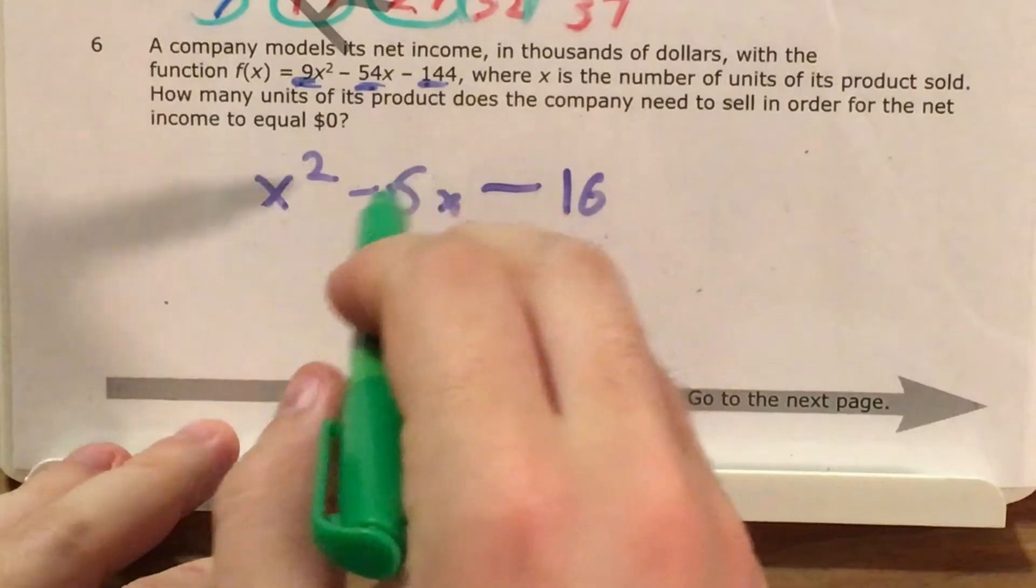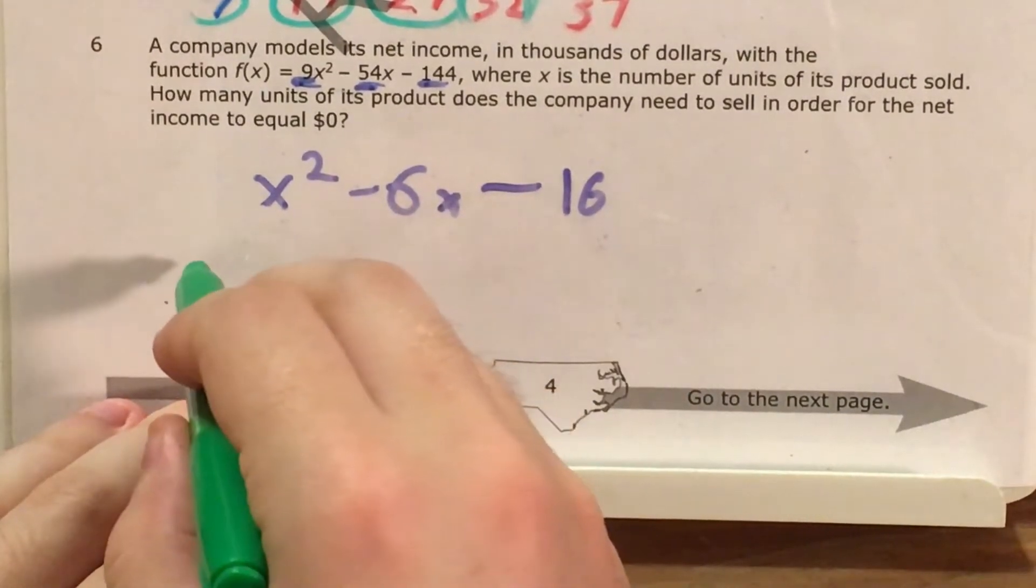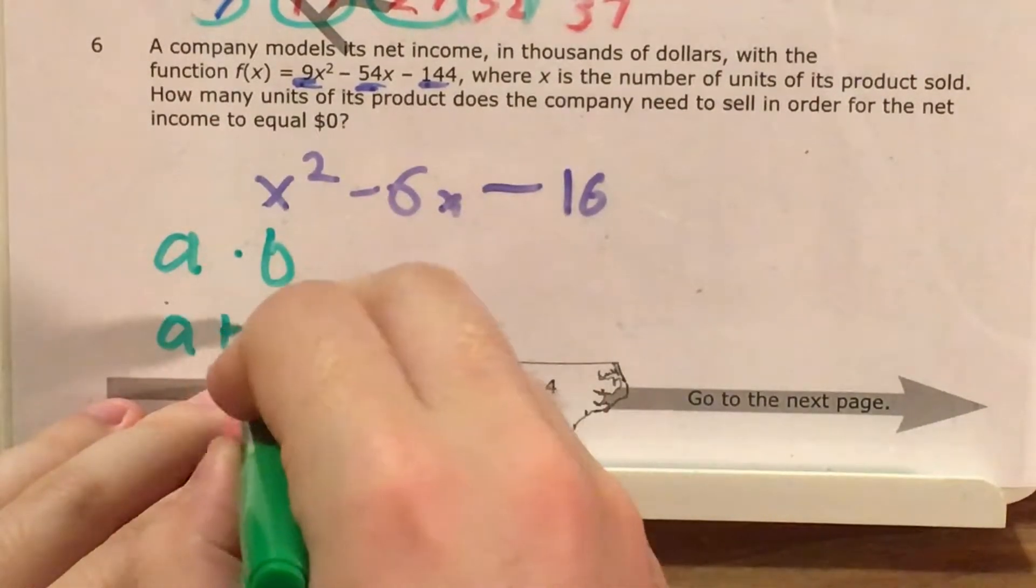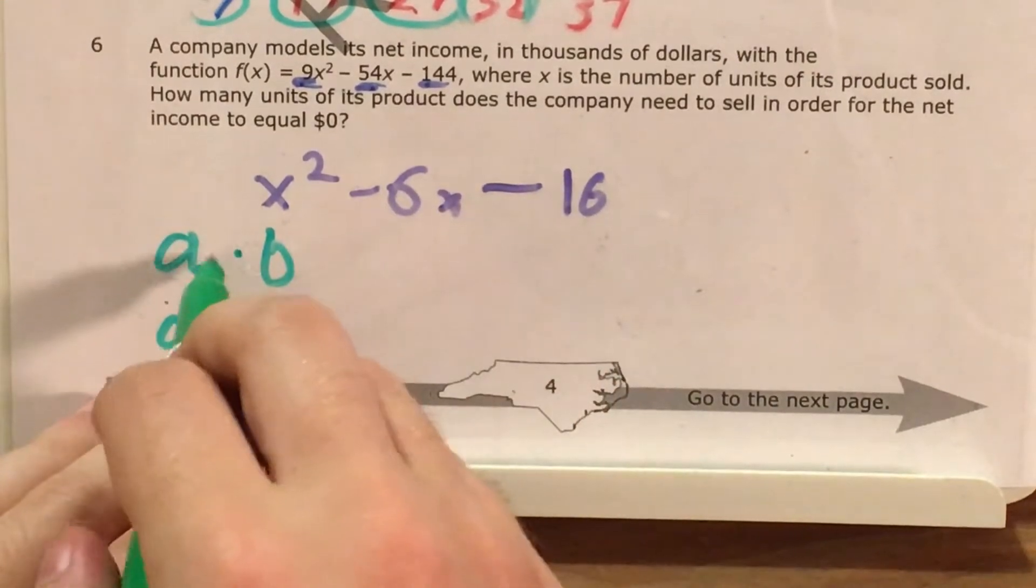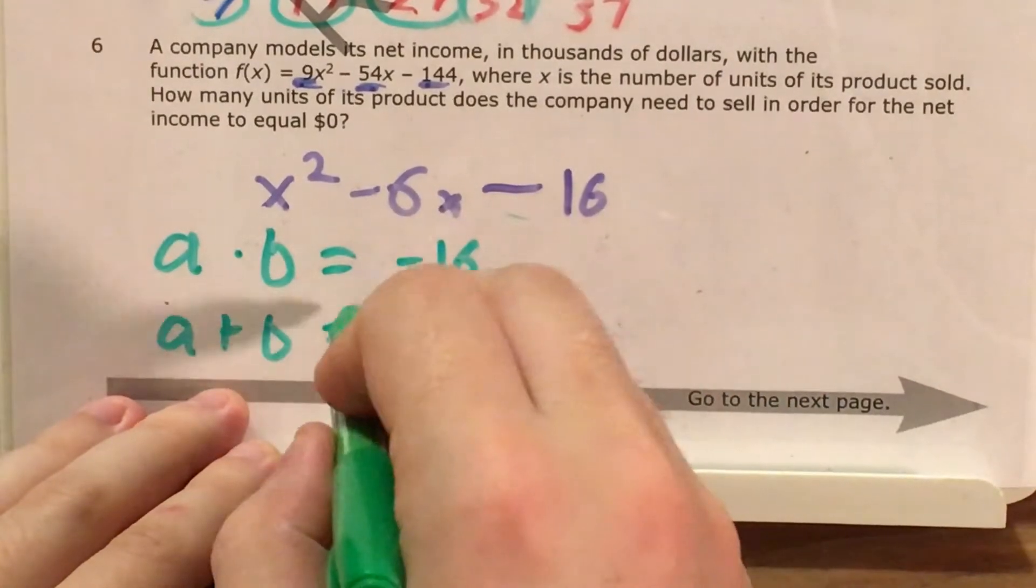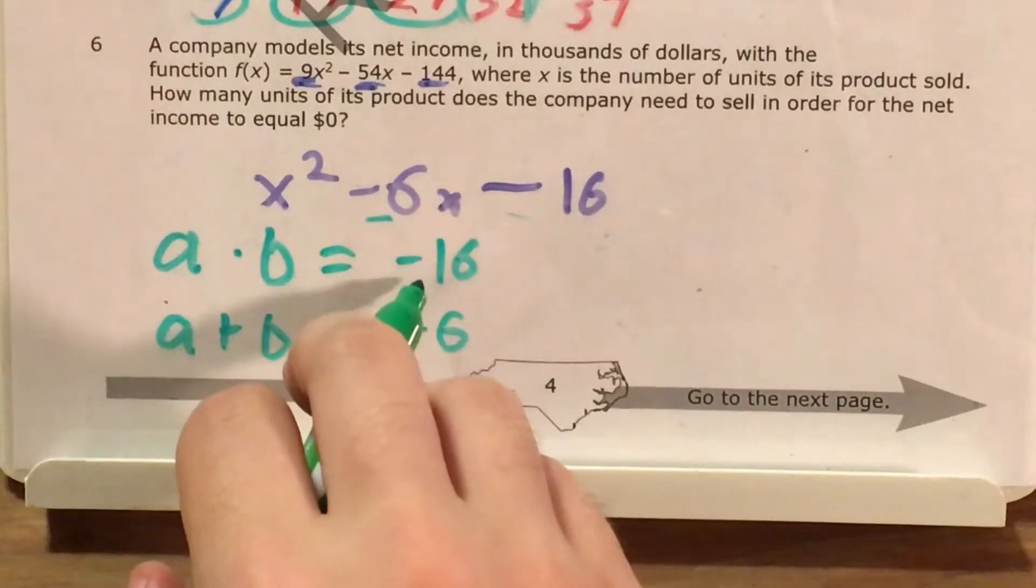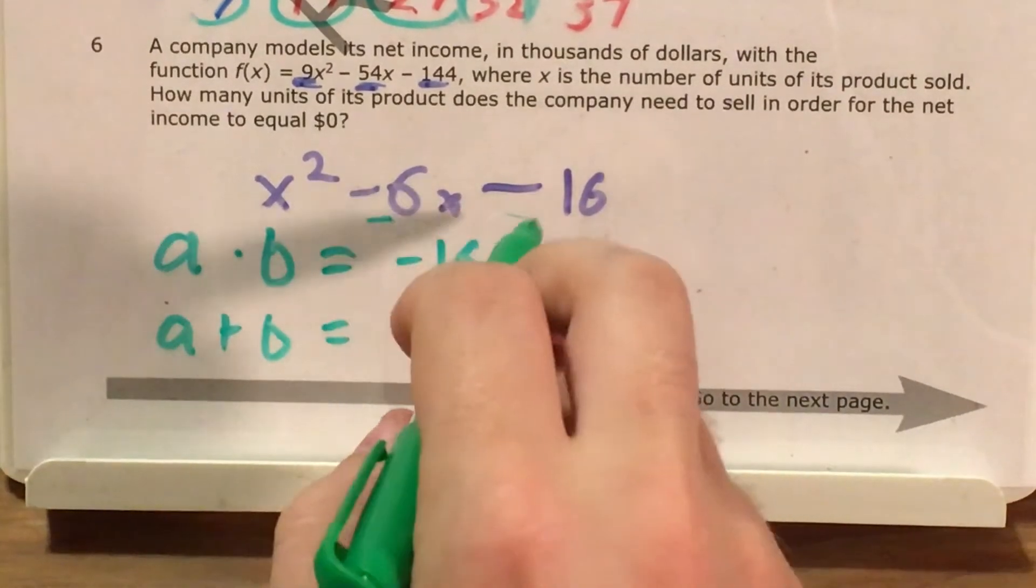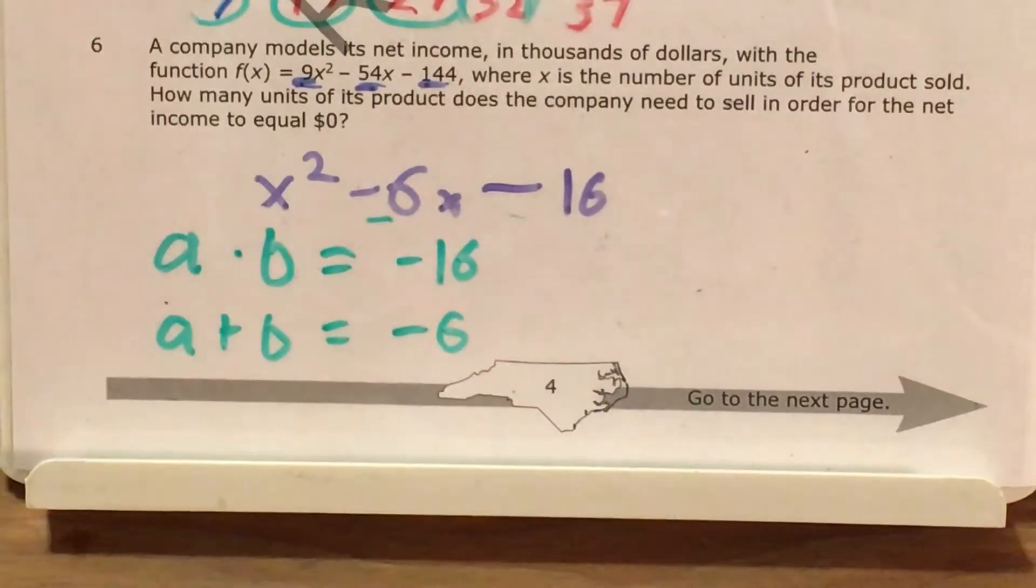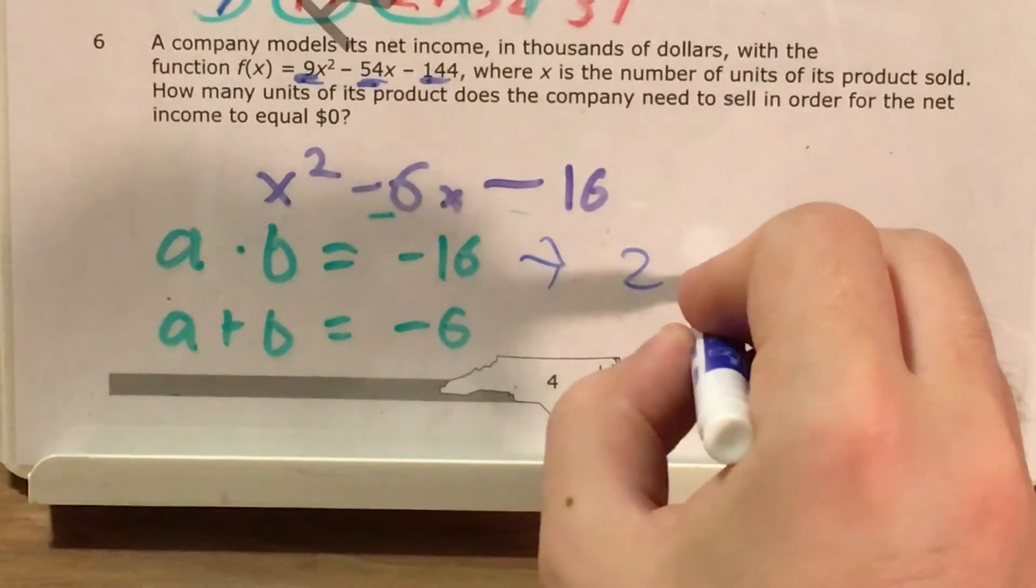And now, how do we factor this? Well, of course, there's no other numbers we can pull out of this, no other factors. So what I'm going to have to do is find two numbers. I will call them A and B. And the idea is, I want them to multiply to give me this number here on the end, and I want them to add to give me this number here in the middle. Now, since this number on the end is negative, that essentially means that I'm looking for two numbers that multiply to get me 16 and have a difference of 6. And those two numbers, in case they didn't jump to your mind already, were 2 and 8.